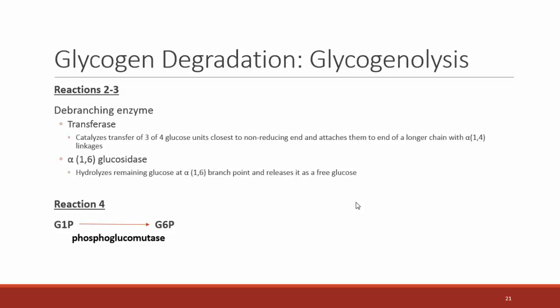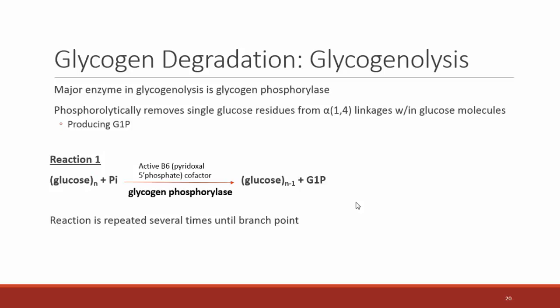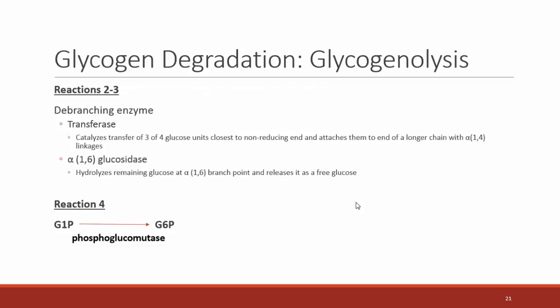When we reach a branch point, we de-branch it — essentially the reverse of what the branching enzyme did in glycogenesis. In reactions 2 and 3 of glycogenolysis, a transferase moves 3 to 4 glucose units and attaches them to the end of a longer chain with an alpha-1,4 linkage, so glycogen phosphorylase can cleave them. Then an alpha-1,6 glucosidase hydrolyzes the glucose at the branch point and removes it as free glucose. After removing the glucose, it is in glucose-1-phosphate form, and phosphoglucomutase moves the phosphate to give us glucose-6-phosphate.